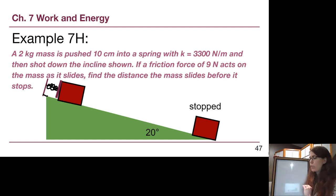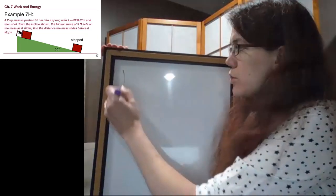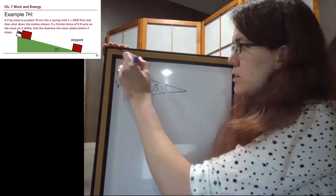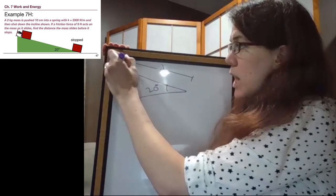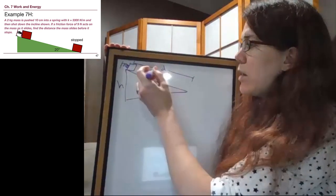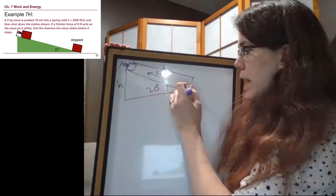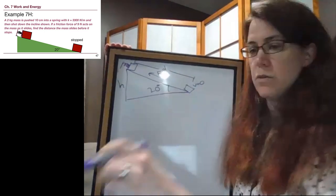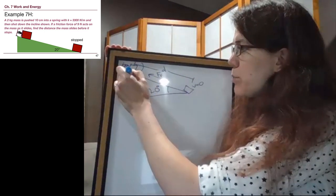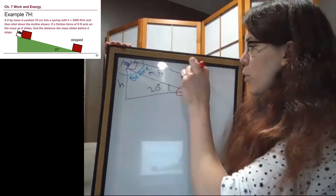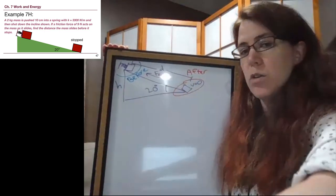The first thing we can do is approach this problem the same way we do every single one. Even before we get bogged down in the numbers, we can draw that picture. We have a ramp that's 20 degrees, there's a height h and a distance d along the ramp, and at the very top there's been a block pushed into a spring. As it slides down the ramp, friction is acting against its motion, and by the time it gets to the bottom we're told that it stops, so V equals zero.